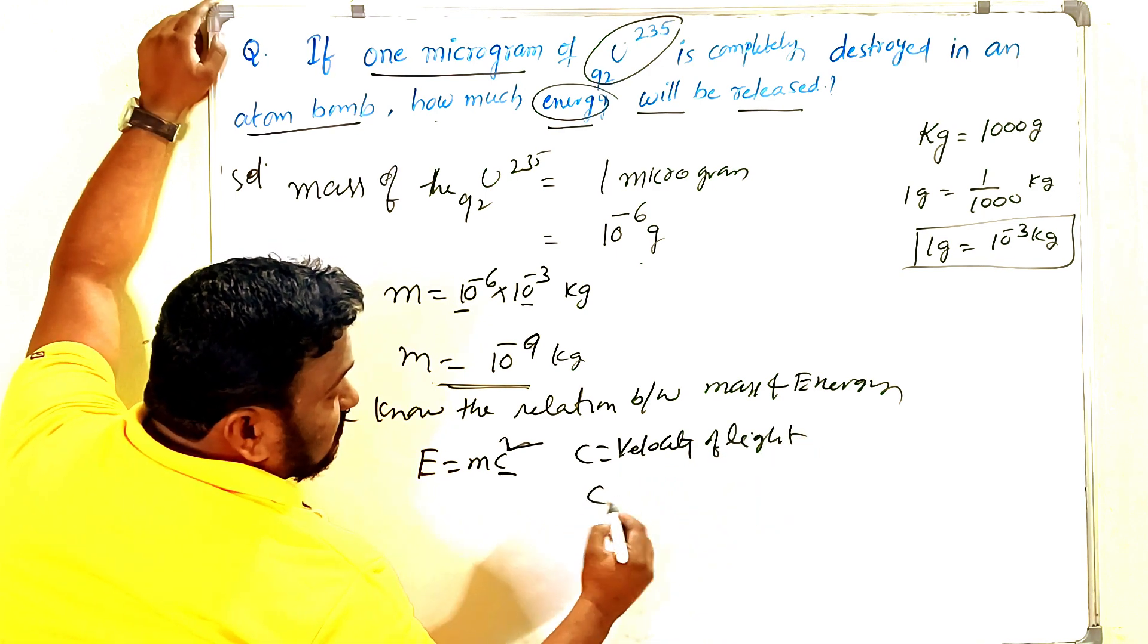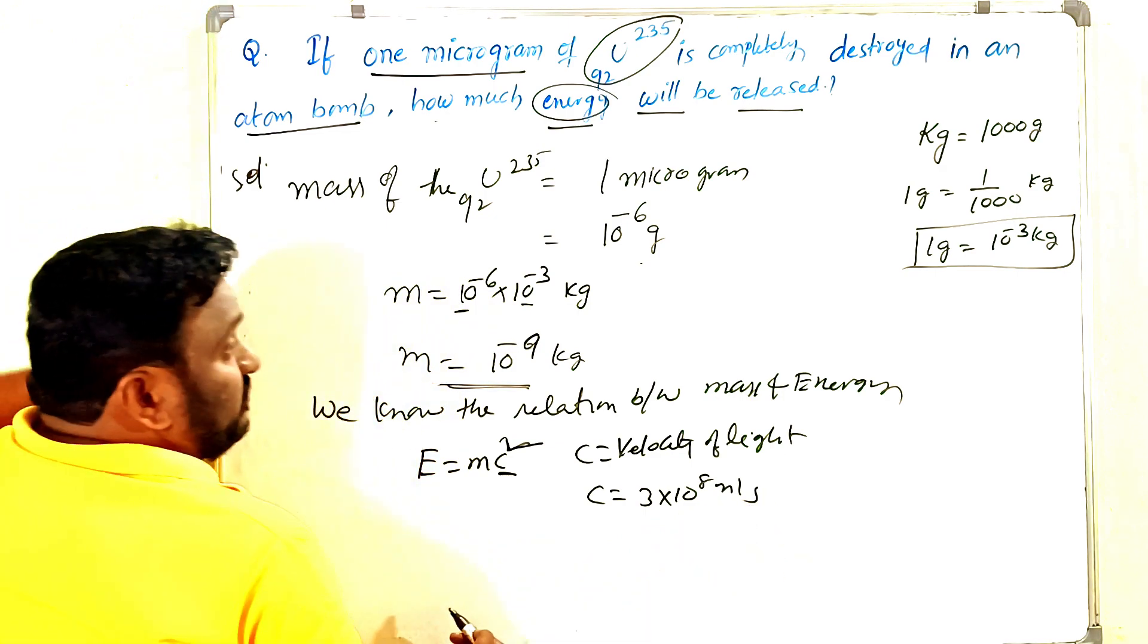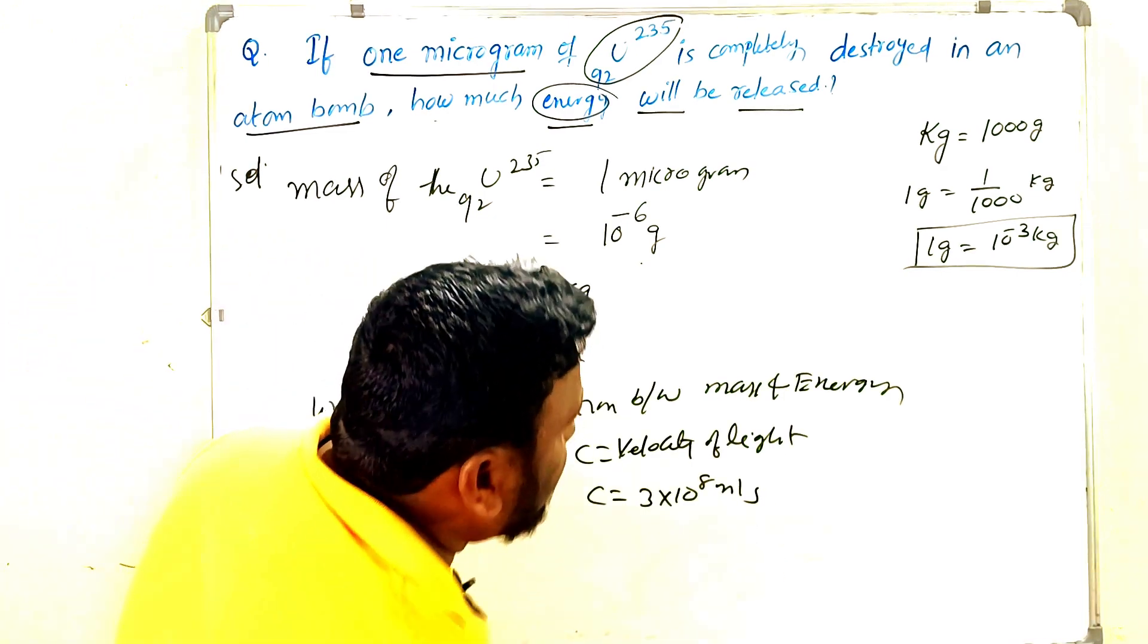Mass is there and what is c? C is the velocity of light. What is the value? 3 into 10 power of 8 meter per second. Then substitute here, you will get the answer very simple.